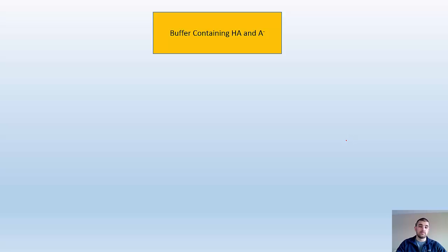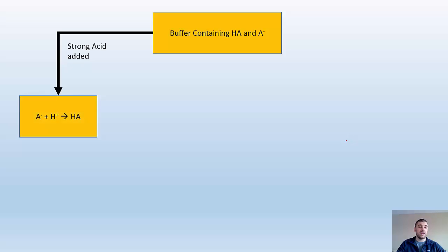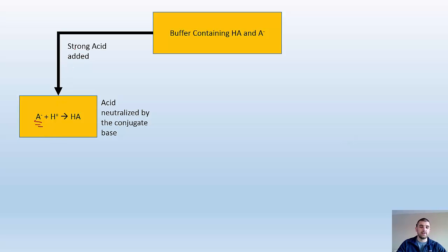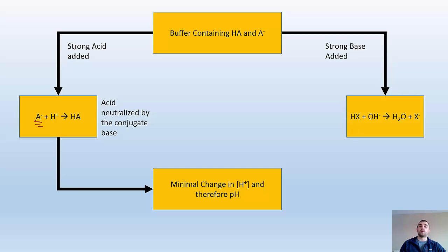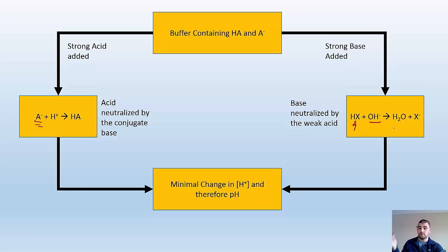So we start with a buffer containing an acid and its conjugate base. If we add some strong acid, the conjugate base neutralizes it — since we added conjugate base to the solution, it neutralizes any acid. Overall, minimal change in H+ and therefore pH stays pretty much the same. If we add strong base, it's going to be neutralized by the weak acid that's in there. Overall, not a whole lot of change in H+, and pH stays relatively the same.